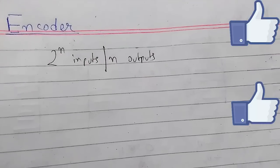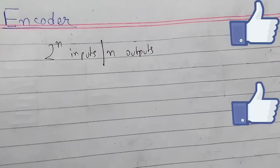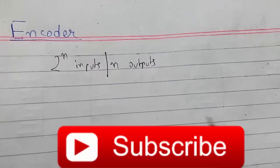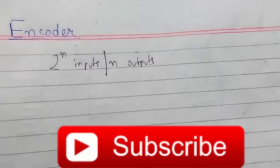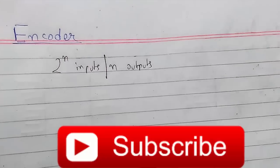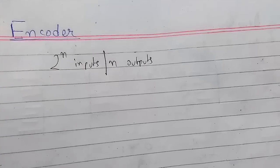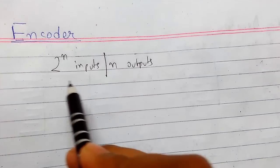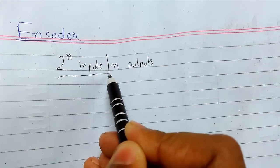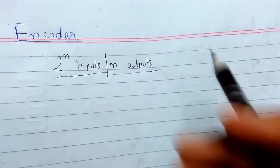Welcome back. Today we will be continuing combinational and arithmetic logic circuits, and we will be seeing about encoders. The operation of encoders is just the opposite of decoders. Encoders have 2 to the power n number of inputs and n number of outputs.